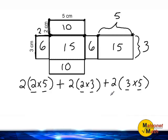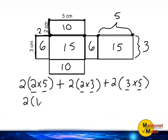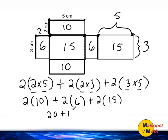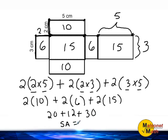Now we are going to solve our expression until we come up with one number in the end. We can simplify this and say we have two rectangles with an area of 10, plus two rectangles that have an area of 6 square centimeters, plus two rectangles with an area of 15 square centimeters. So if we double 10 that's 20, and if we double 6 that is 12, and if we double 15 that is 30. And if we add this all together, this rectangular prism has a surface area equal to 62 square centimeters.